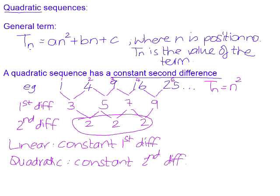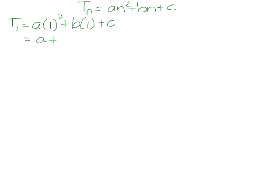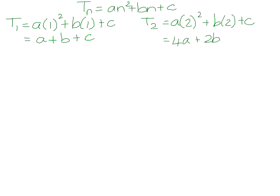Let's have a look at an example of a general sequence that we generate using Tn equal to an squared plus bn plus c. We want to investigate the general nature of this pattern. If I wanted to find T1, I would replace the n value with 1: 1 squared is 1, so that leaves us with a. B times 1 is b, and we just have c at the end. If we want to investigate what term 2 would look like, we replace n with 2, which leaves us with 4a plus 2b plus c.